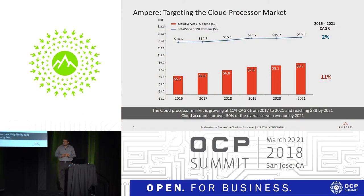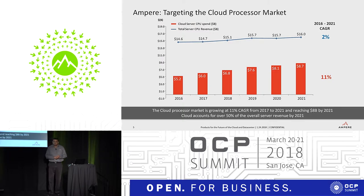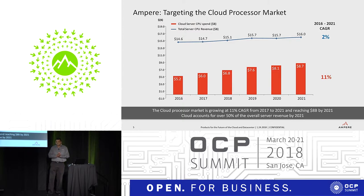Talking about the cloud market segment itself: the cloud market is a $14.6 billion TAM for microprocessors, increasing to about $16 billion by 2021 — a CAGR of about 2% from 2016 to 2021. The cloud portion of that market is going from about $5.2 billion in 2016 to about $8.7 billion in 2021, growing at a CAGR of about 11%. So the microprocessor TAM is growing at 2% CAGR while the cloud portion is growing at 11% CAGR.